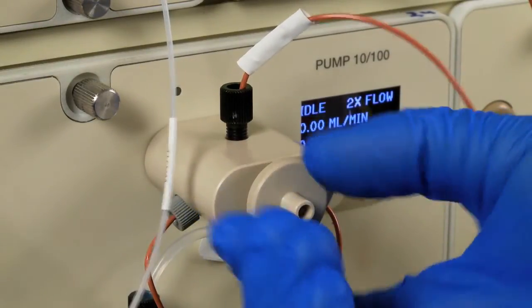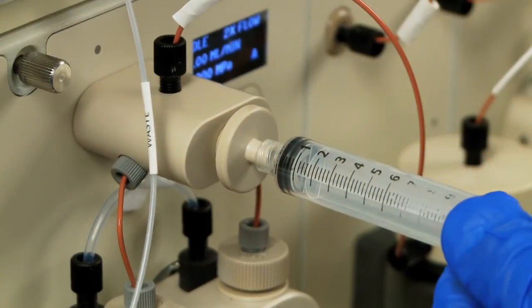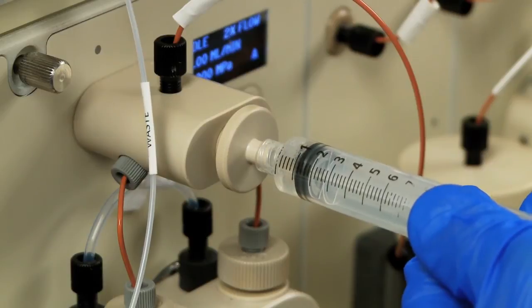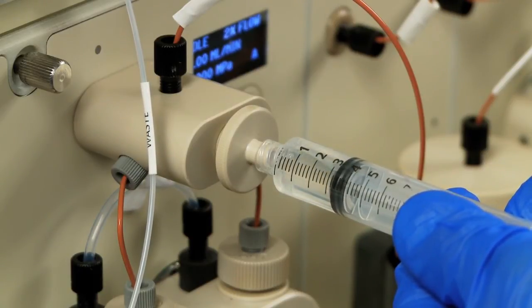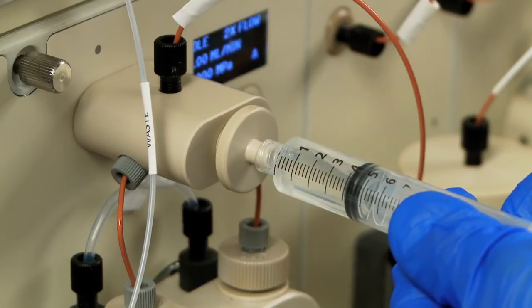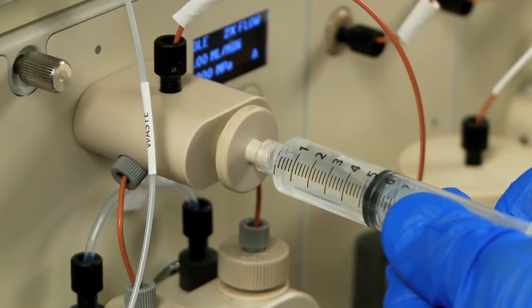Open the priming port by turning it counterclockwise. Then attach a syringe into the port. Pull back on the plunger until a steady stream of liquid is observed and no more bubbles appear. You should withdraw approximately 10 milliliters of liquid. You may want to do this a second time to ensure the lines are completely filled with buffer.